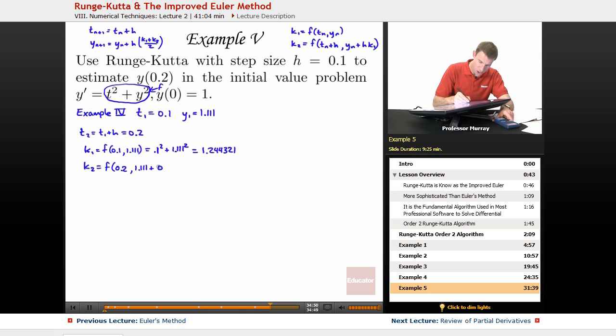Plus h is 0.1 times k1, which is 1.244321. So, this is f of 0.2, and I'm just going to do some calculations right there.